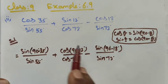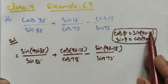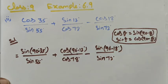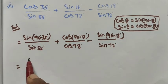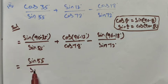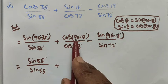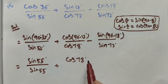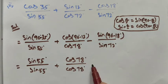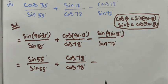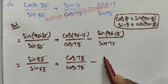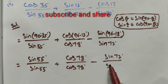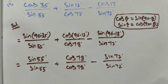Sin 90 minus theta. Now subtract: 90 minus 35 is 55 divided by sin 55 degree, plus cos 90 minus 12 is cos 78 divide by cos 78 degree, minus sin 90 minus 18 is 72, so sin 72 degree divide by sin 72 degree.